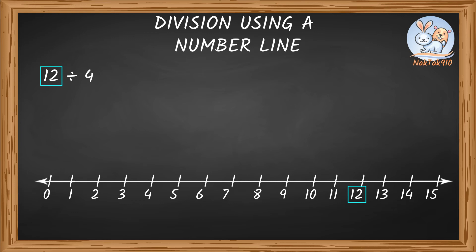Starting from 12, skip counting by divisor, that's 4 in this case. And go backwards till you reach 0. Divisor tells you how big or small your jump is to skip the numbers. Here it's 4.